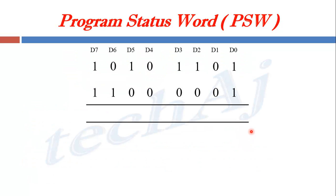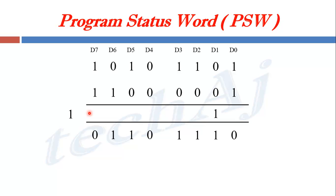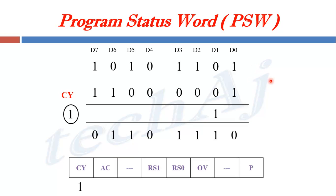The carry flag gets set after an 8-bit addition or subtraction that generates a carry from D7 bit. For example, if we add two 8-bit numbers, we may get a result that generates carry two times — one carry after addition of D0 bits, and a second carry after addition of D7 bits. As per the definition, whenever there is a carry from D7 bit, the CY bit will get set to 1. So if ALU performs such an addition, the CY bit will get set to 1 automatically.